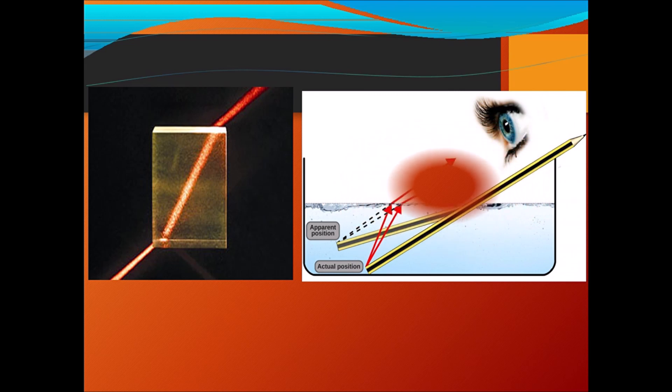Hello my dear students, I'm back with a new video. Today's video is related to lower grades as well as high grades, so this video is meant for both. Without delay, let's start. You can see here a ray of light passing through a transparent glass slab. Here the ray of light is again passing — from water going to air — so basically the ray of light is passing from one transparent medium to another.